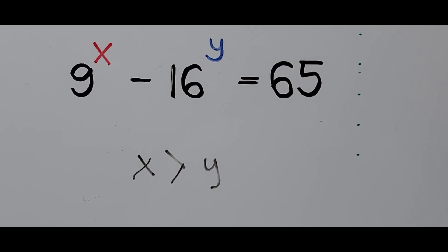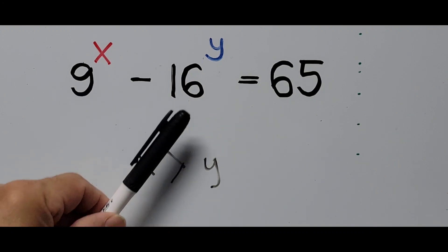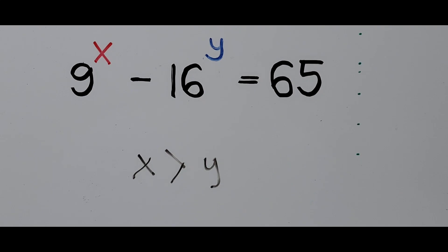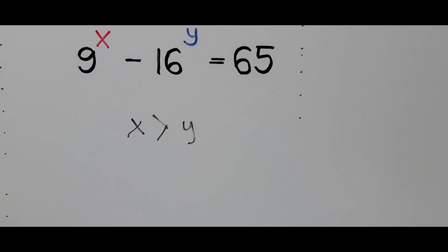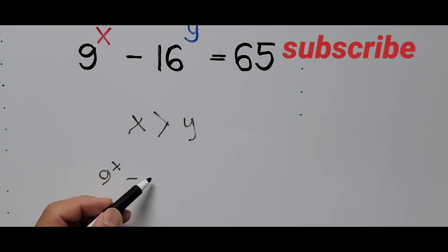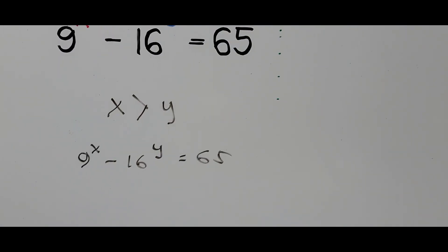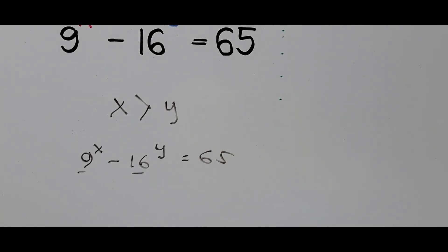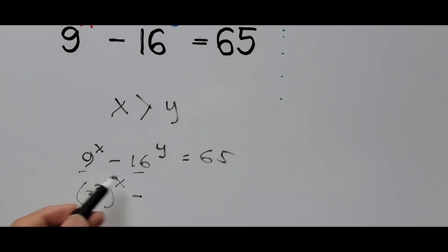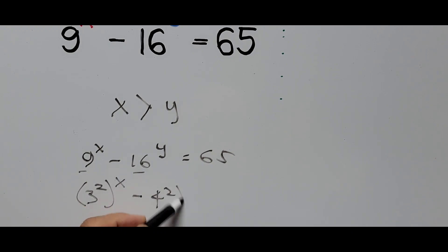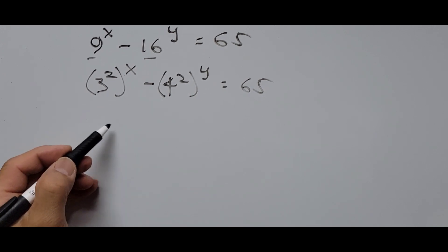My approach in solving this kind of equation is by the use of substitution. If you notice, the bases — with exponent X and exponent Y — are perfect squares. So the first step is to rewrite the bases. Let's write the equation again: 9 to the power of X minus 16 to the power of Y equals 65. Now, 9 can be written as 3 squared to the power of X, and 16 as 4 squared to the power of Y, equals 65.